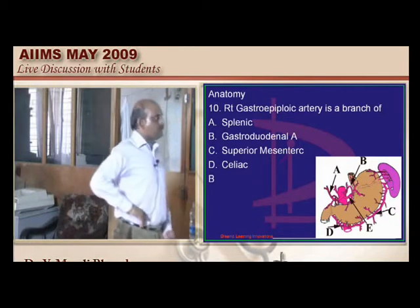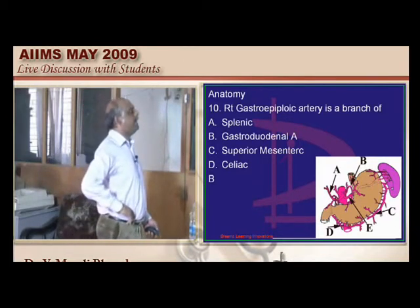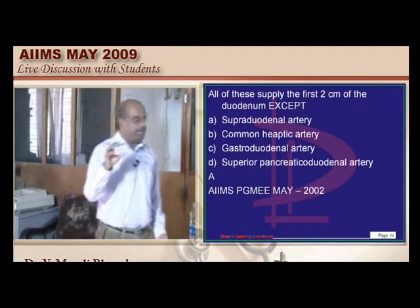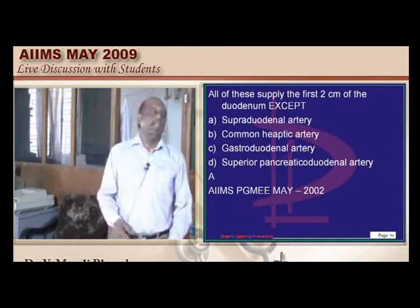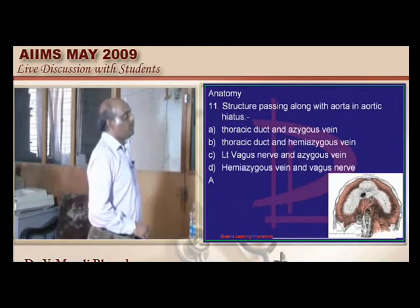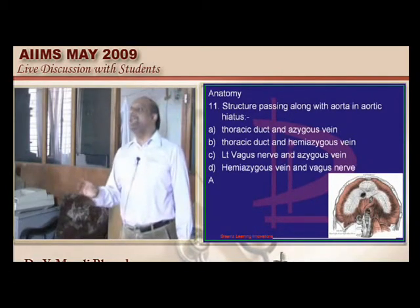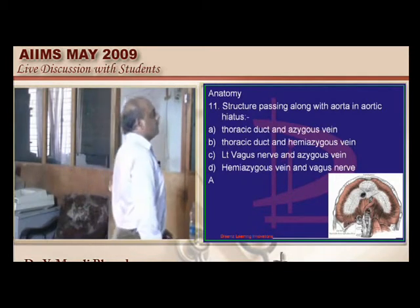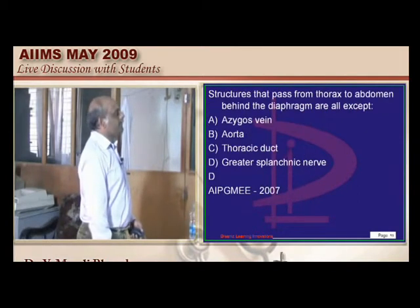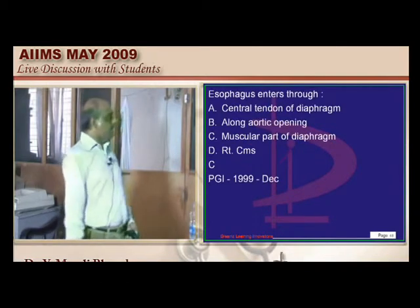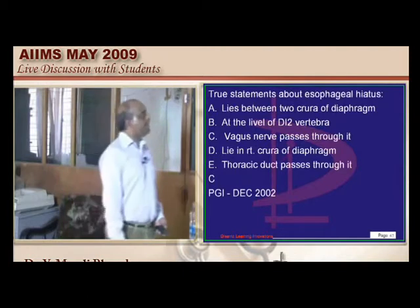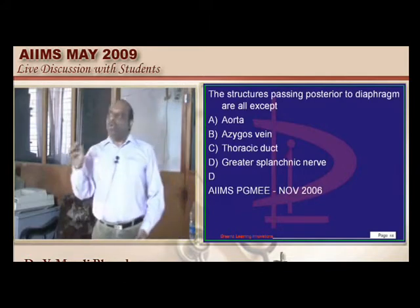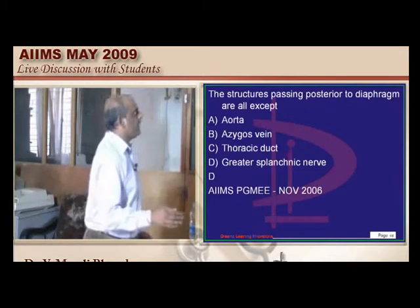The right gastroepiploic artery is a branch of which vessel? This is a favorite question of All India 2001 and AIMS May 2002. We need to remember that it is the gastroduodenal artery that gives rise to the right gastroepiploic artery. What structure passes through the aortic hiatus? This is a 200% sure question — AIMS June 2000, All India 2007, PGI December 99. We need to remember that the thoracic duct and the azygous vein, along with the aorta, pass through the aortic hiatus of the diaphragm.